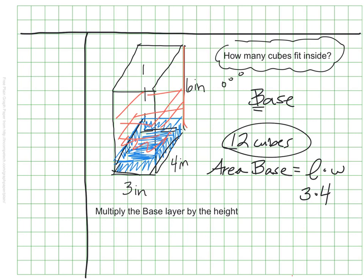So what I'm doing there is taking my base layer of 12 and multiplying it by the height of 6 to see that my volume is 72 inches cubed. I could fit 72 cubes that are each inch by inch by inch in my entire shape.